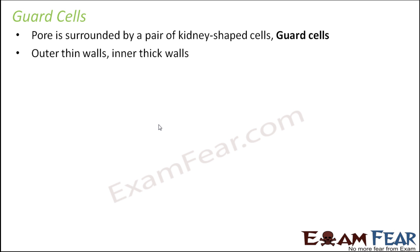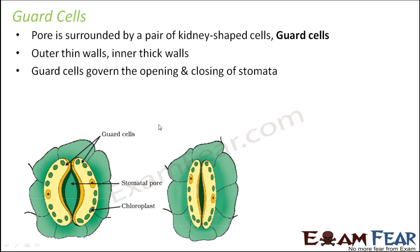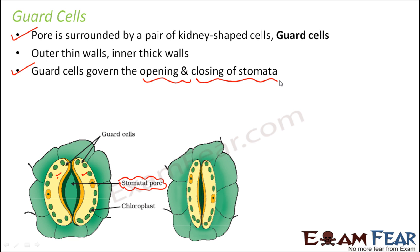Guard cells have very thin walls on the outer side and thick walls on the inner side. Looking at the picture, you can see the stomata and the guard cells. The stomata is basically the opening — this open space is the stomatal pore, created by two cells, the yellow-colored guard cells. When the guard cells come very close to each other, the pore is closed and stomata gets closed. When they move apart, stomata opens and gases can move through the pore. As soon as it closes, no more gases can move. That is how guard cells govern the opening and closing of stomata, which in turn decides the exchange of gases.